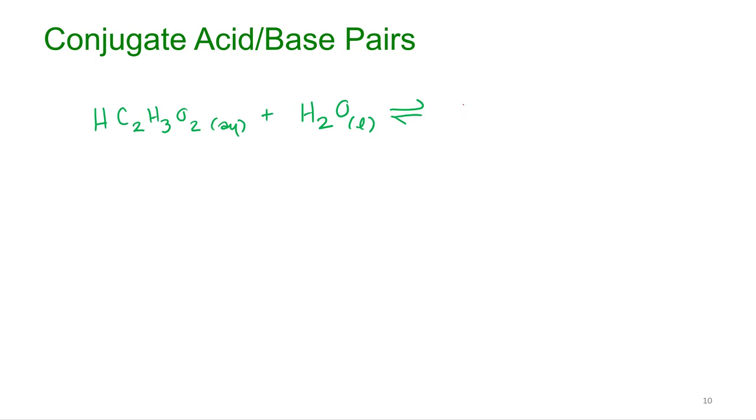Once water gets that proton, what's it going to produce? Hydronium. Good. So H3O+. And then after acetic acid, once this molecule loses a proton or donates its proton, what's left? C2H3O2-. After you lose that plus one charge, you're going to have a minus charge. And that will be aqueous as well.